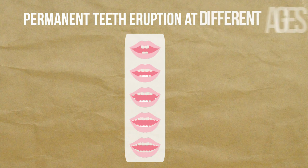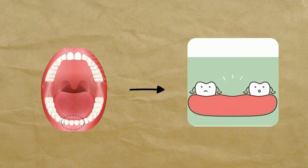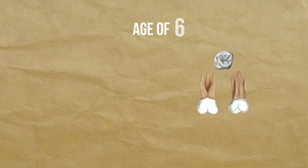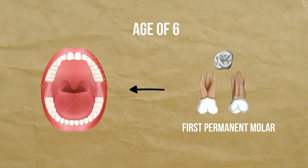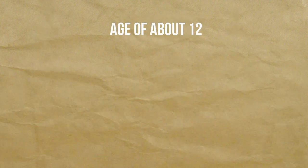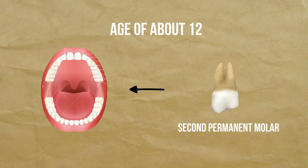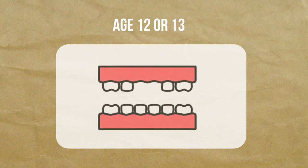Permanent teeth erupt at different ages. The central incisors fall out first and are replaced by permanent teeth. At age six, the first permanent molar comes out behind the baby teeth, and at about age 12, the second permanent molar comes out as well. Both of these molars do not require the fall-out of baby teeth. By about age 12 or 13, most kids have lost all their baby teeth and have a full set of permanent teeth.